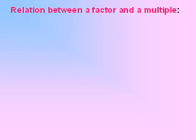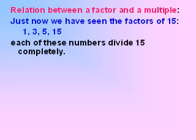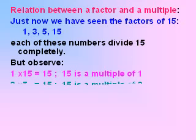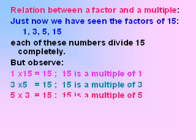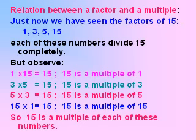Let us see the relation between a factor and a multiple. The factors of 15 are 1, 3, 5, and 15. Factor means they divide 15 completely — 1 divides 15, 5 divides 15, and 15 divides 15. Now, 1 multiplied by 15 is 15, meaning 15 is a multiple of 1. Similarly, 3 multiplied by 5 is 15, so 15 is a multiple of 3, a multiple of 5, and a multiple of 15. So when we say 3 is a factor of 15, in reverse we can say 15 is a multiple of 3. There exists a relation between factor and multiple.